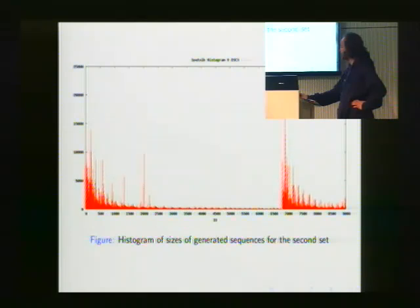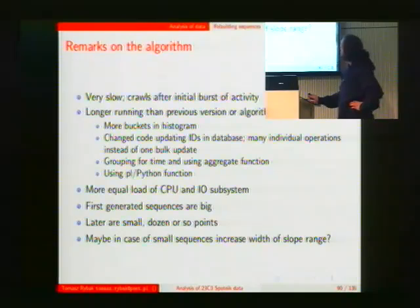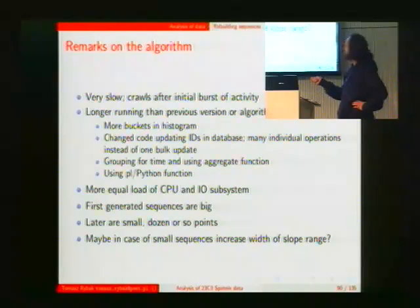It was very slow. I think it was slow because it had to calculate more buckets. I changed code so it was updated not in one run, but each point has its own transaction to update it. Also, I used grouping and used Python function to group it. So those are, in my opinion, the main points for this slowing.